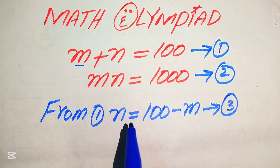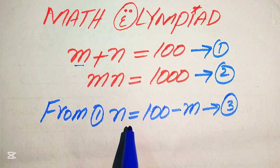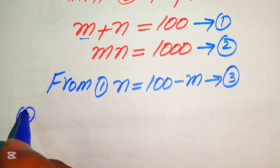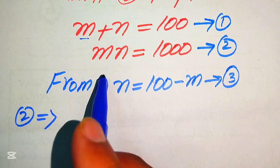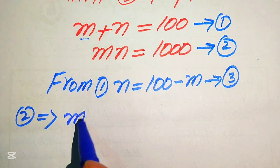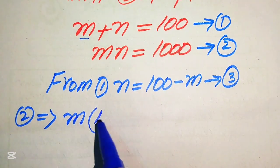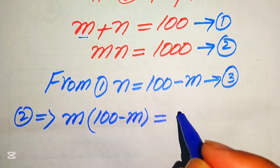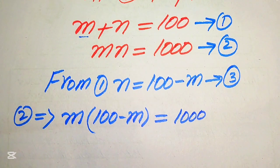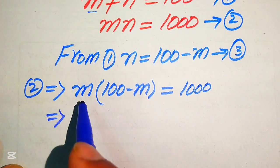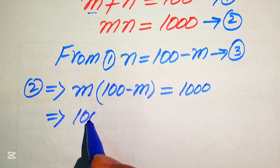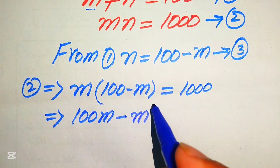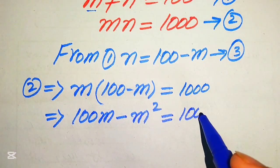Now, in order to find the values of n and m, we first need to put the value of n into equation number 2. So equation number 2 gives us m times n, and the value of n is 100 minus m, which equals 1000. We multiply m through to get 100m minus m squared equals 1000.